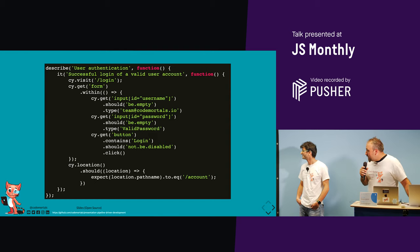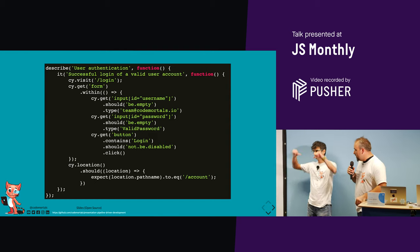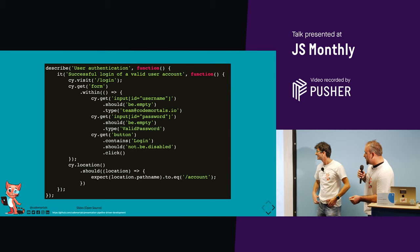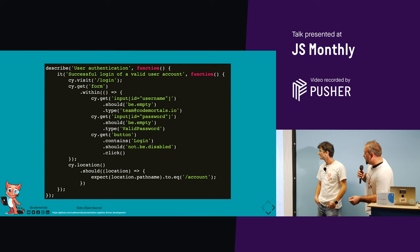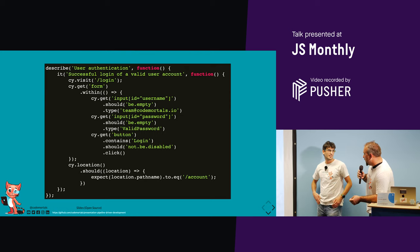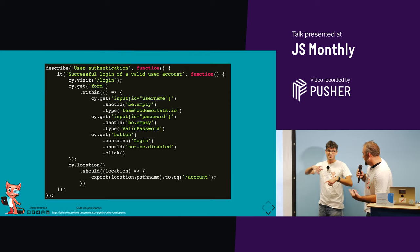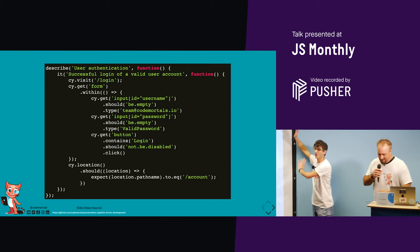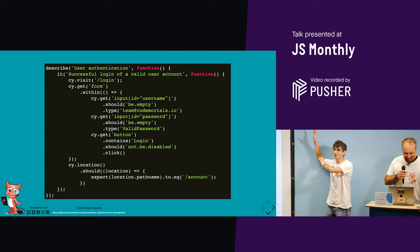A typical Cypress test without Cucumber is more Jasmine-driven: you have a describe block for 'user authentication', then a 'successful user login' test — it visits the login page, grabs the form element, grabs each of the inputs, and so on. This works, but it can become quite hard to maintain and doesn't look great.